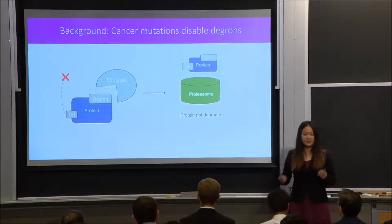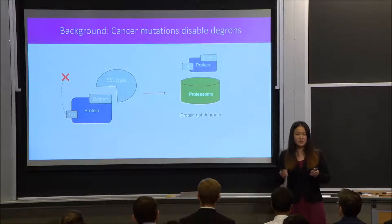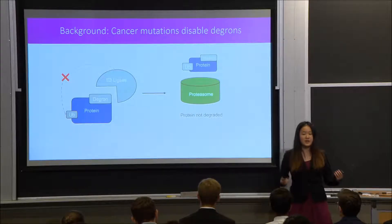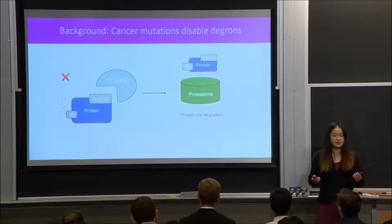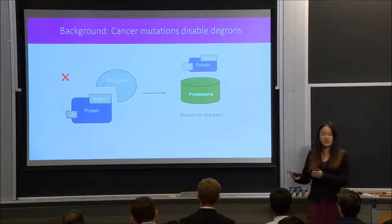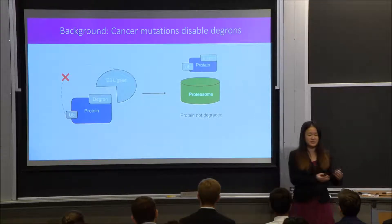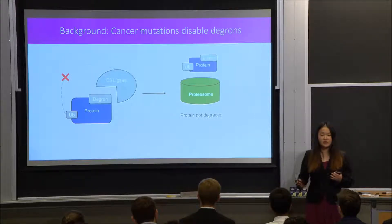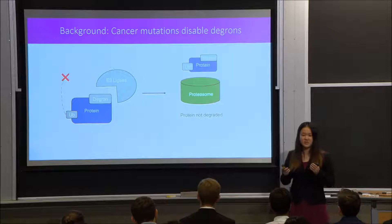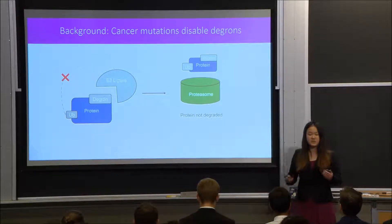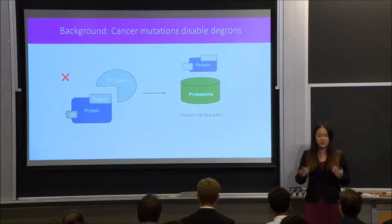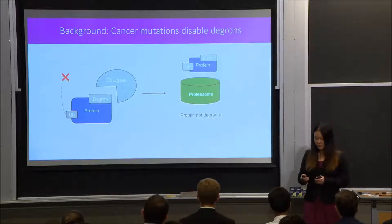This can cause a variety of problems, most importantly the uncontrolled growth of cancer cells. Although degrons play a crucial role in oncogenesis — the transformation of normal cells to cancer cells — currently the associations between specific degron mutations and the protein sequences that they target are unidentified. This was the primary goal of our research: to identify these associations.